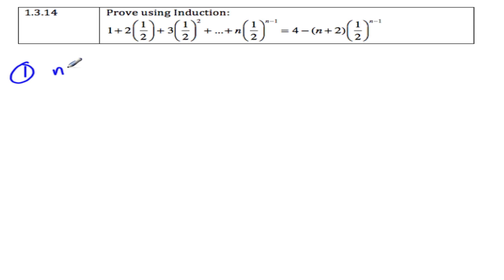So let's start with n equals 1. The left-hand side we can see is 1, and the right-hand side is 4 minus 3 times 1 half to the plug-in 1 there, we get 0. So that's 4 minus 3 times 1, which is 1.